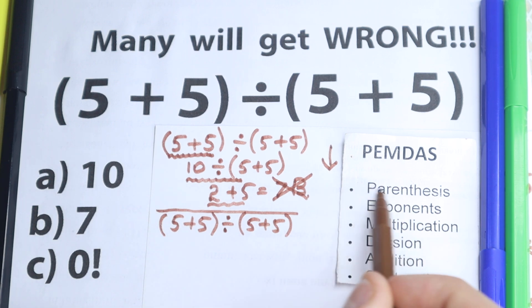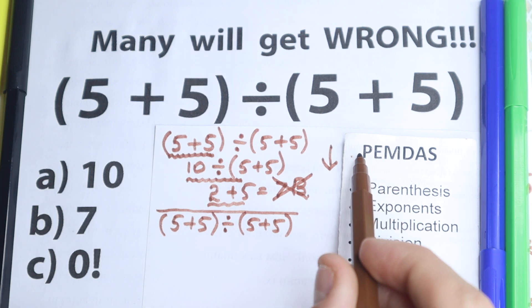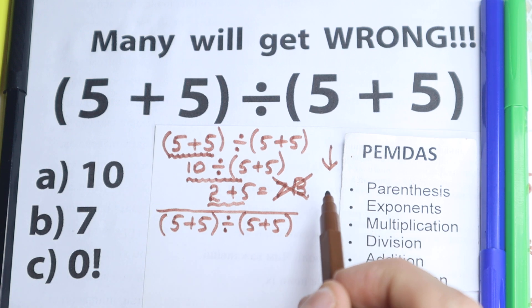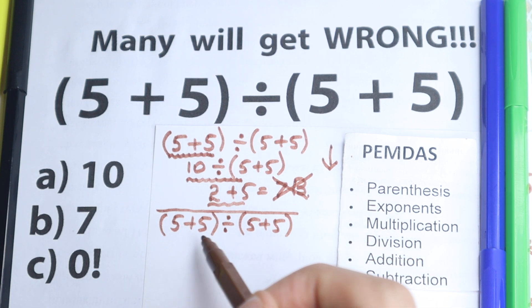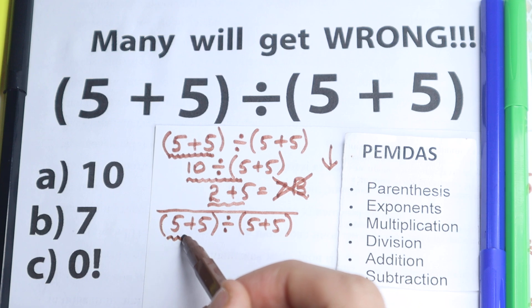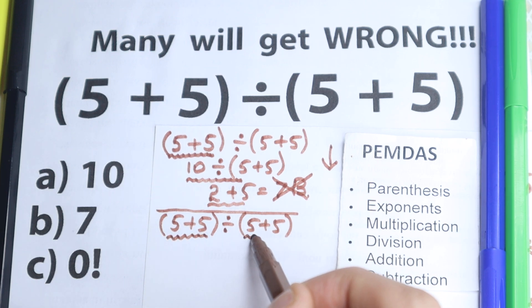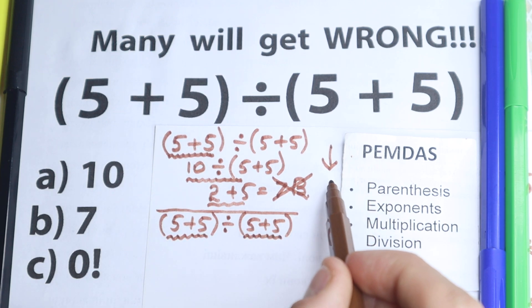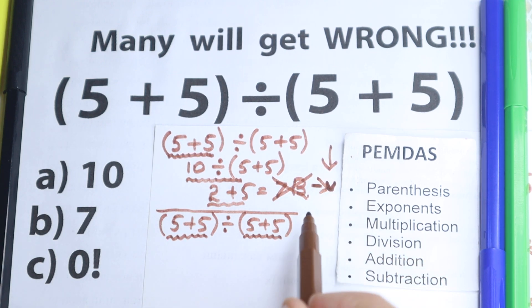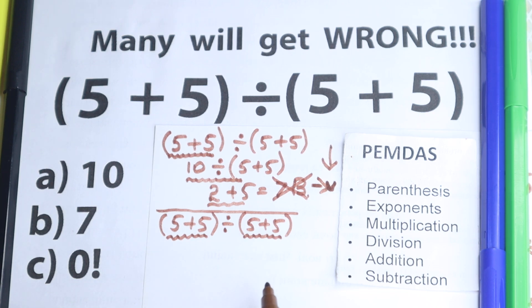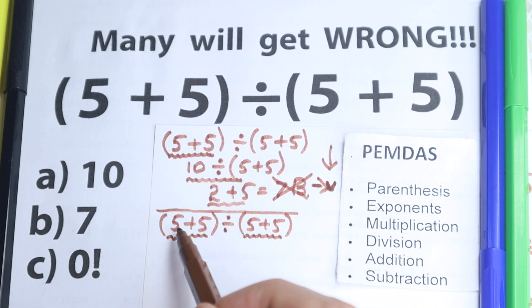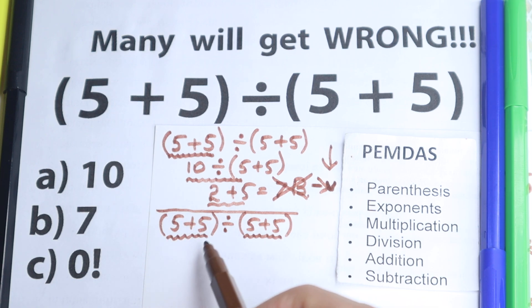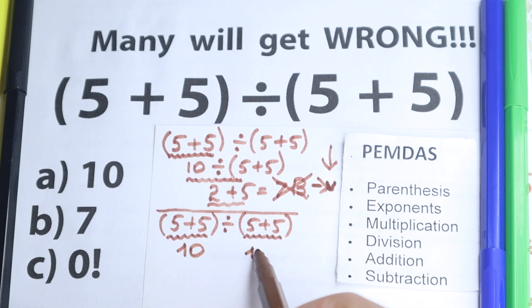First step: let's go to parentheses, because we need to start with them. This is the letter P, and right here we need to start from the parentheses. Where do we have parentheses? Here we have parentheses on the left side and parentheses on the right side. So we need to start from these parentheses first. And I want to say — doesn't matter PEMDAS or BODMAS — every time you need to start from the parentheses.